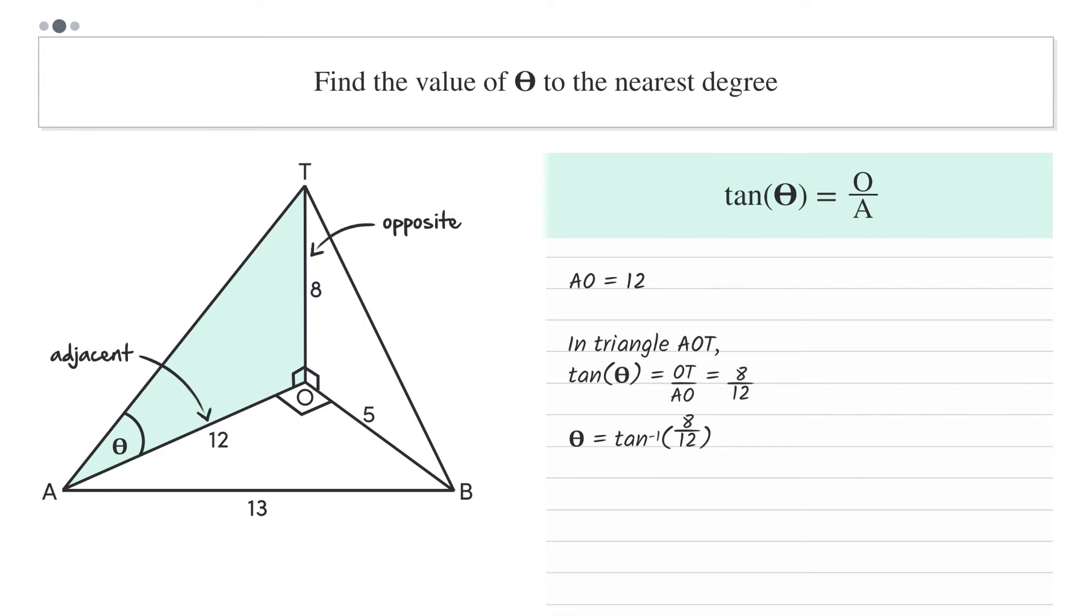Taking the inverse of tan to get theta as the subject gives us theta equals inverse tan 8 over 12. Then, we can use our calculators to find that theta equals 33 degrees, 41 minutes and 24 seconds. The question asks for theta to the nearest degree, so we'll round this up to 34 degrees. Good job with that question. Let's move on to another one.